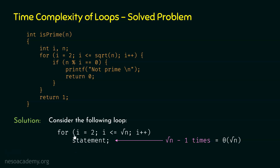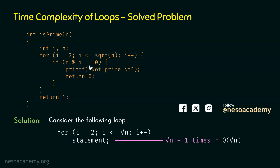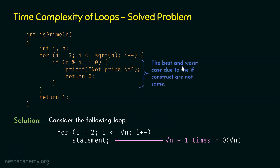Here we can observe we have a simple statement — this is not an if construct. But in the actual question, we do not have a simple statement; we have an if construct. Due to this if construct, the best case and worst case of this for loop are not the same. Because it might be possible that this condition is satisfied for some value of i, in which case the loop will not run square root of n minus 1 times — it will run less than that. So the best case and worst case due to this if construct are not the same. We need to determine them separately.